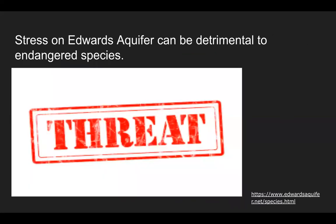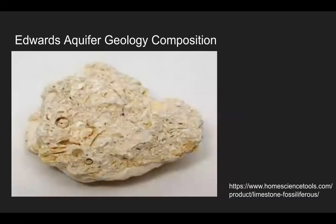Stress on the Edwards Aquifer can also be detrimental to endangered species. The Edwards Aquifer is home to over 40 species of aquatic and subterranean species, including rare species and seven endangered ones. Stress to the aquifer and low water levels provide an unstable habitat and a larger threat for these already endangered animals.